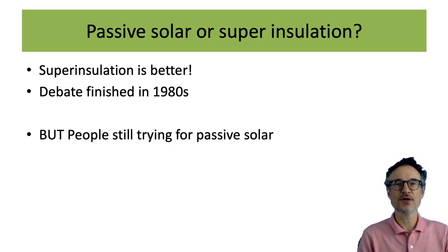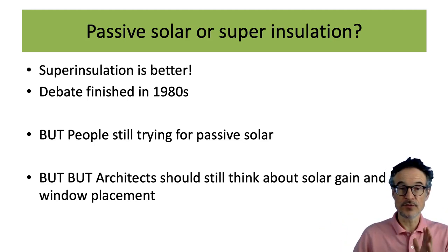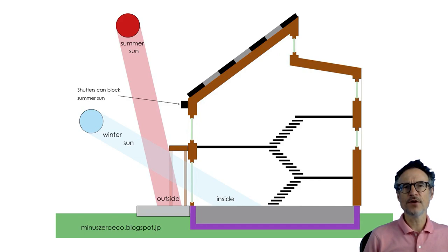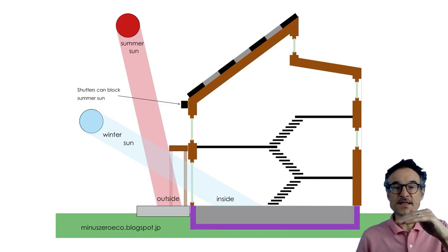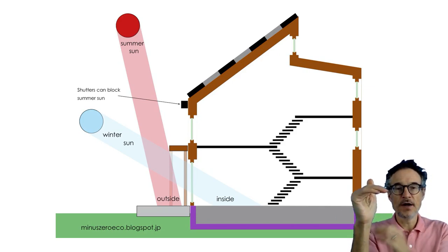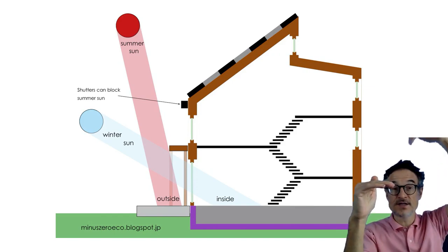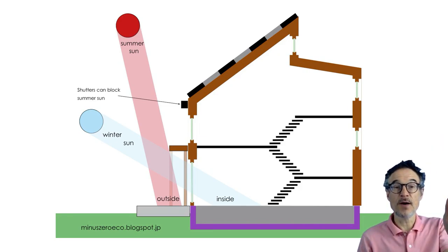People still try to build passive solar houses, but the key point is: if your house does have windows, it makes sense to think about where they are and to take advantage of the free heat from the sun. Usually it is possible and not so difficult. In summer the sun is high, in winter it's low. So it's easy to add shading that blocks the high summer sun but lets in the low winter sun. You can also use mechanical shading — blinds that come down to block the window in summer and stop heat coming in.